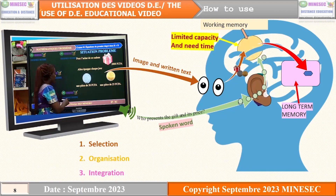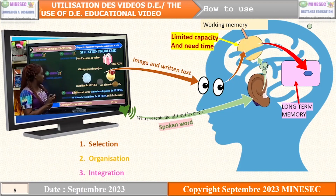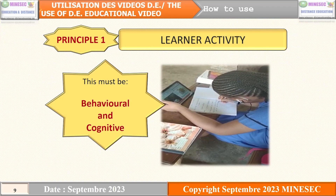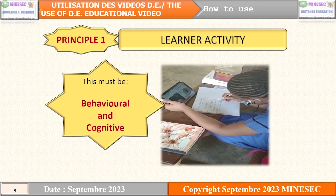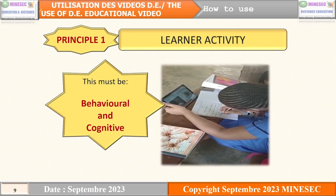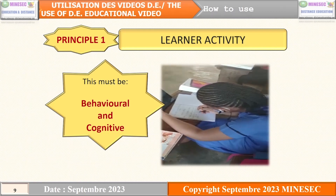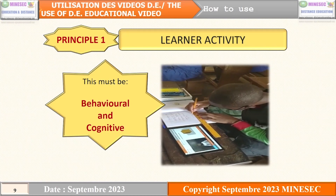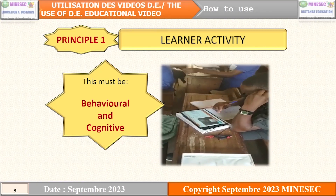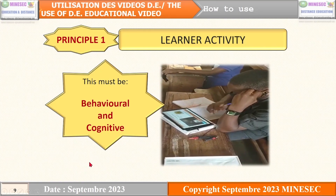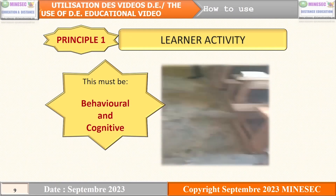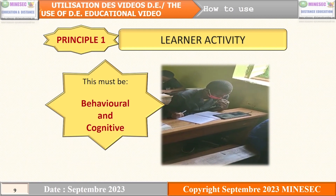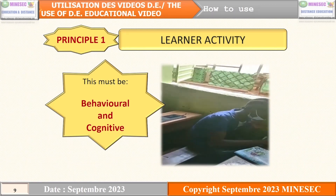This third step will help the learner not to forget what has been taught before. It is now obvious that there are some principles that must be respected for selection, organization, and integration to be well done. The first principle is learner activity, which entails the behavioral and cognitive attitude, whereby the learner is taking down notes, doing sketches, and thinking in order to select, organize, and integrate. A passive attitude will not help the learning situation.